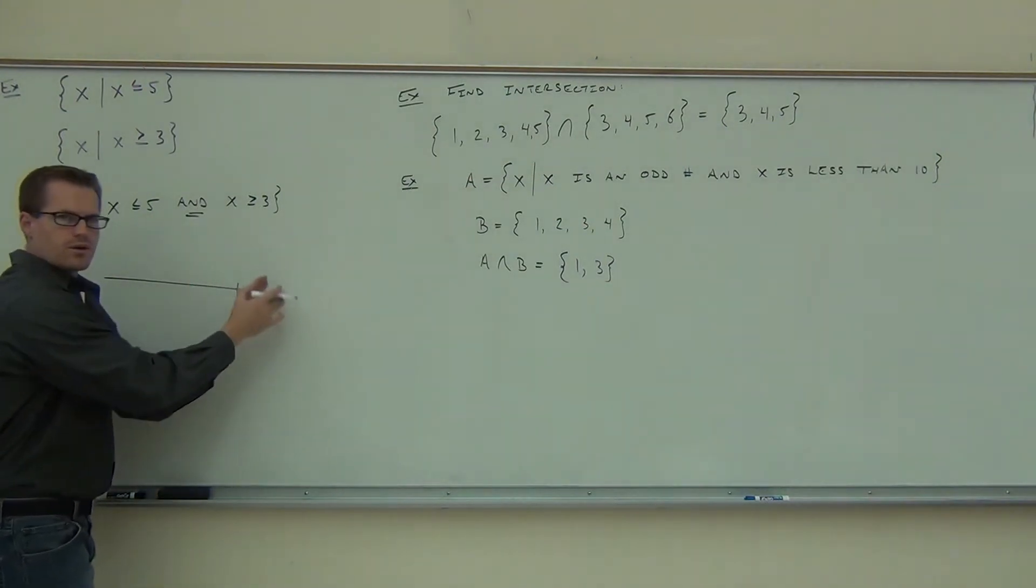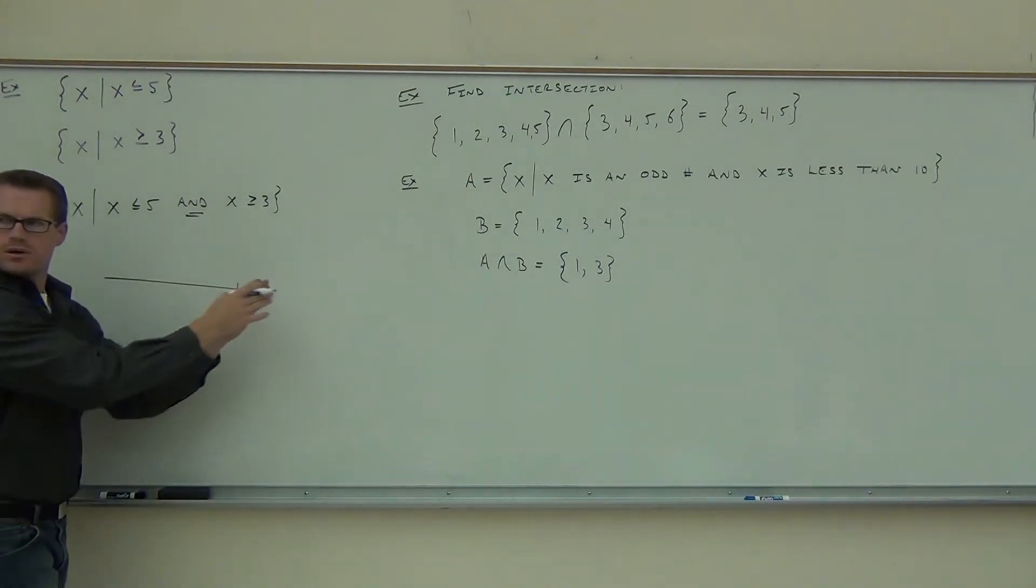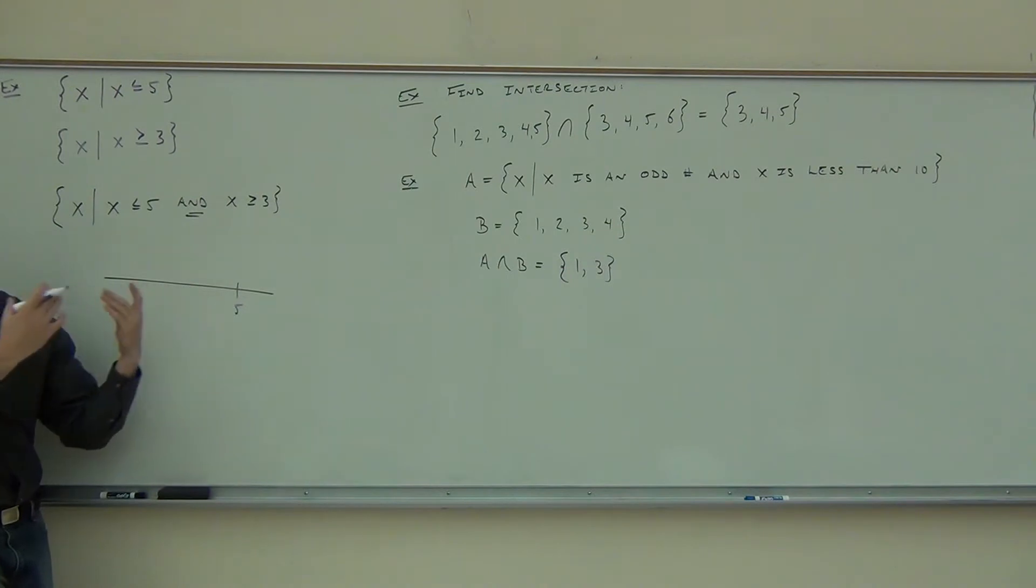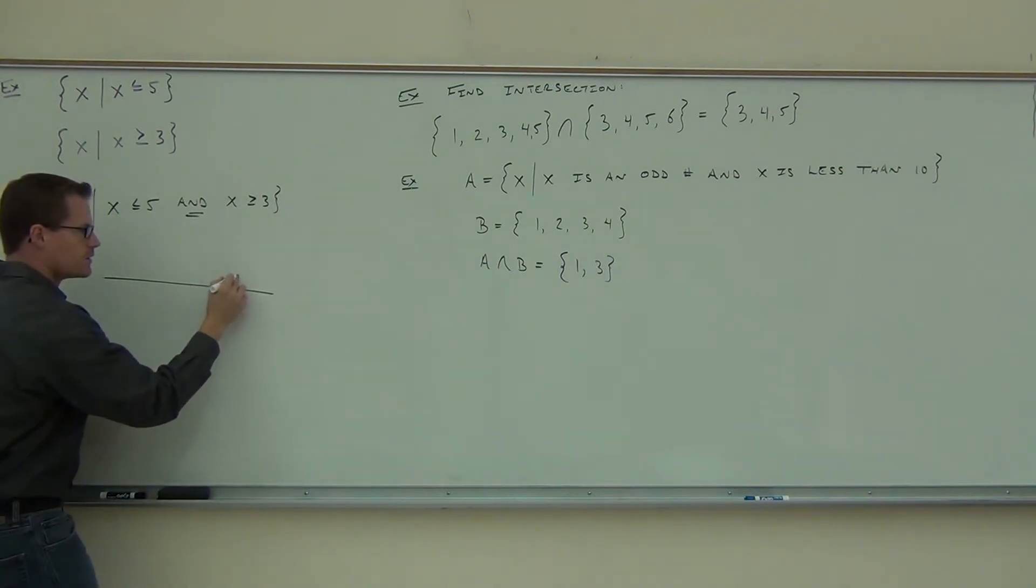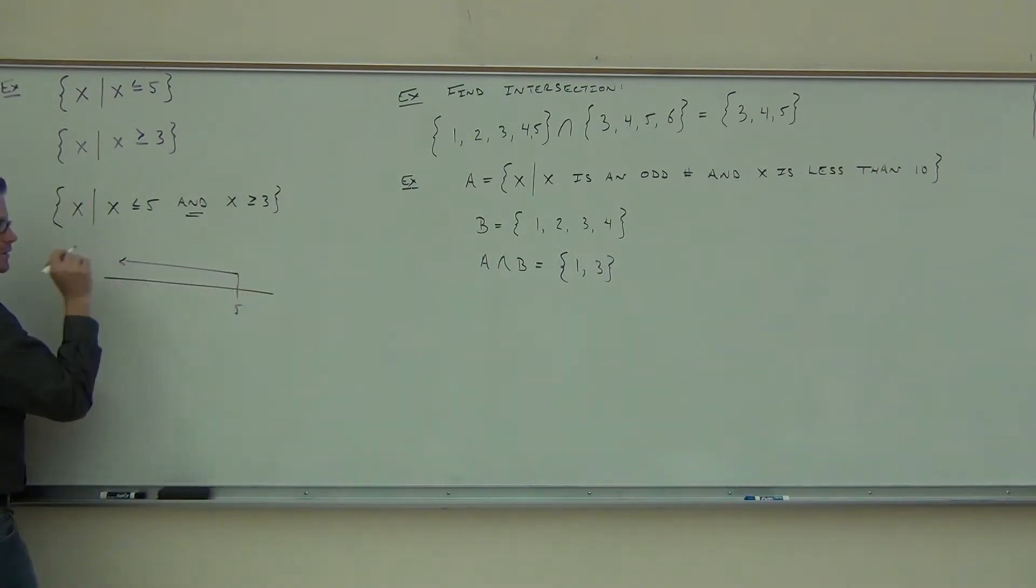Is that all the numbers to the right or all the numbers to the left? Which one? This is a number line, right? And the numbers that are less than 5 are this way. Great.